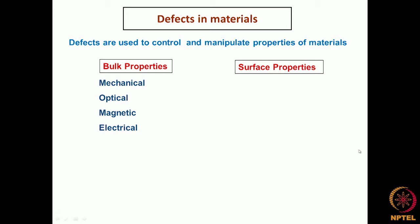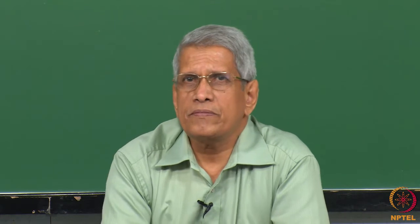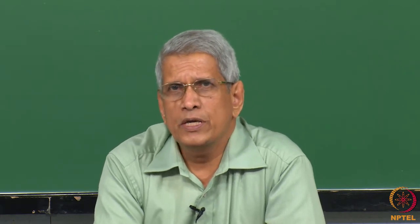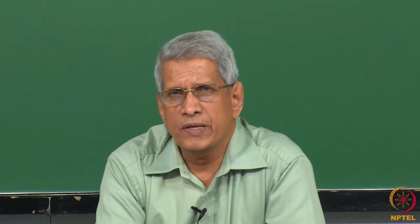What are the surface properties which we can control? The one which comes foremost is the corrosion behavior of the material — that is, by controlling composition or impurity on the surface of the sample, we can alter the corrosion behavior of the material. Similarly, catalytic property is another one which can not only be controlled but also changed, depending upon the type of defects present on the sample surface and the type of crystal structure which it has.